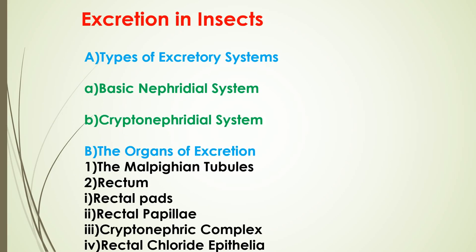On the basis of association or dissociation of the distal end of Malpighian tubules with the rectum, two types of excretory systems are recognized: one is the basic nephridial system and the second is the cryptonephridial system.